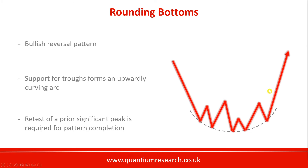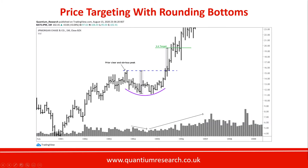We have an example of a rounding bottom forming partway through an uptrend on JP Morgan shares. In this case there is a clear and obvious peak which is used as the pattern completion level. You break above that prior clear and obvious peak, and by using a minimum one-to-one projection target, you calculate the distance between that peak and the lowest low of the formation, then project this distance from the point of breakout to get your one-to-one target.